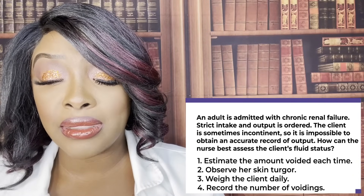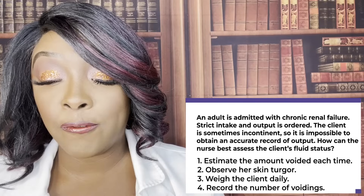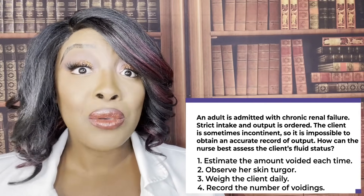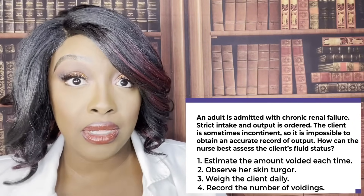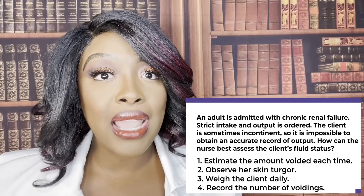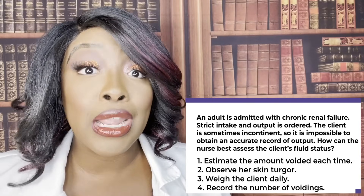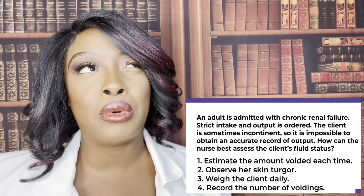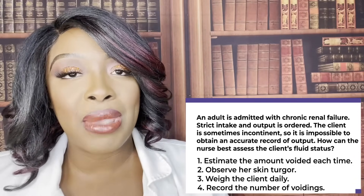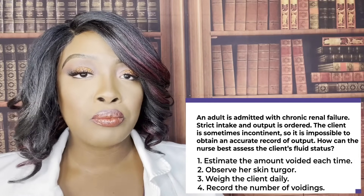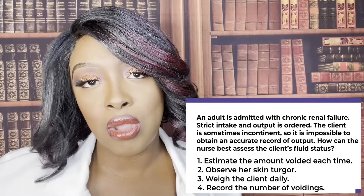How can the nurse best estimate the client's fluid status? One, estimate the amount voided each time. Two, observe skin turgor. Three, weigh the client daily. Four, record the number of voidings. The correct answer is three — weigh the client daily. When it comes to fluid status, our best indicator is not intake and output, not skin turgor — it's daily weights. This principle is used all over NCLEX, including CHF patients. Use the same scale, same clothing, in the mornings before the patient eats.